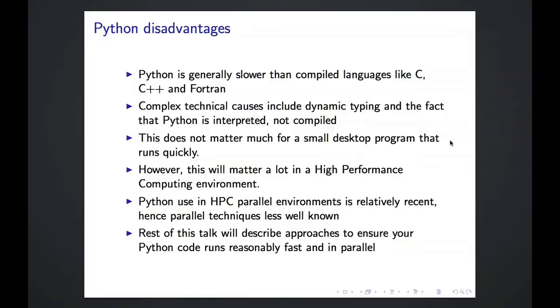Another concern is that Python use in HPC parallel environments is relatively recent, hence parallel techniques are less well known. There isn't as much material online describing how to use, for example, MPI with Python compared to C and Fortran, although that is changing. The rest of this talk will describe approaches to ensure that your Python code runs reasonably fast and in parallel.